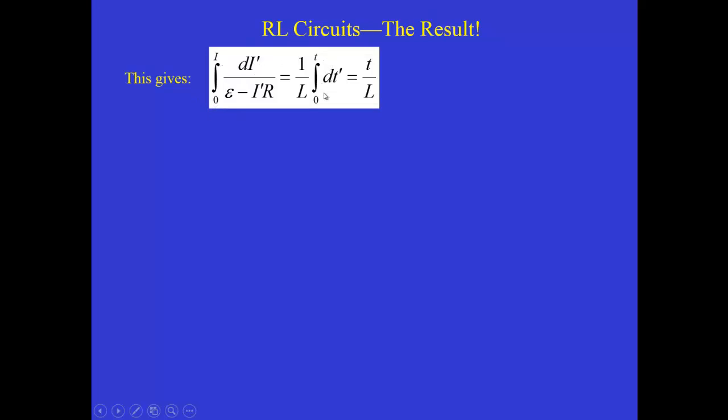On the right hand side, we're integrating from time zero to a final time t. And notice I've put primes on the variables i and t. The right hand side of this equation is simple. The integral of dt prime from zero to t is just t. So the right hand side gives us t over L.